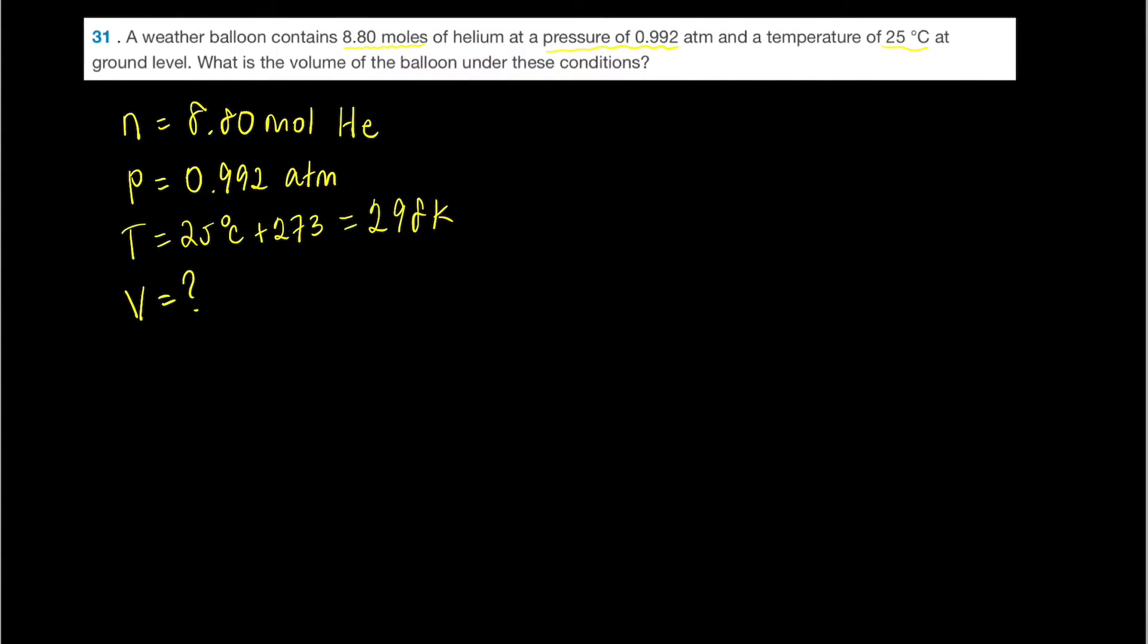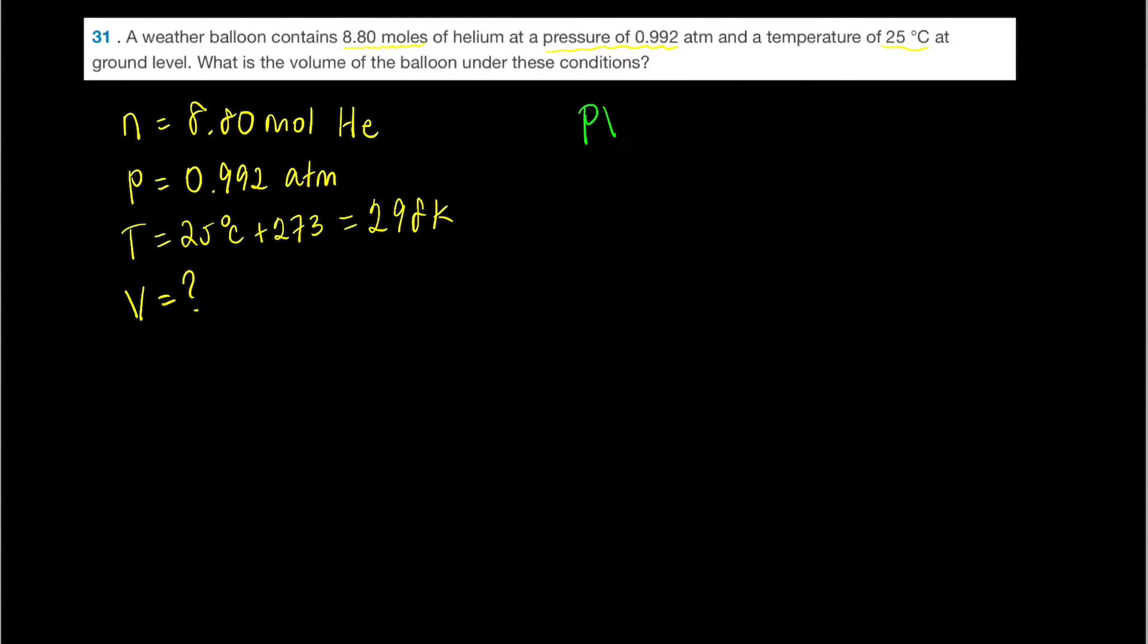So the ideal gas law is PV equals nRT, and R is going to be your constant. The units are very important. They always help us decide what conversions we might need to do. So we have moles in units of moles, we have atmospheres, the pressure in atmospheres, we have the temperature in Kelvin, and the volume is going to be in units of liters.